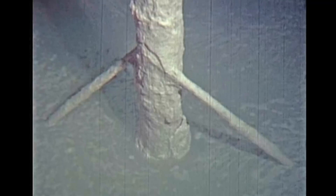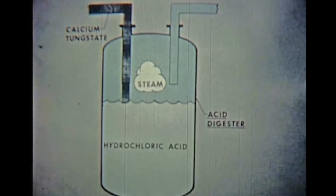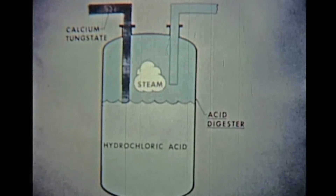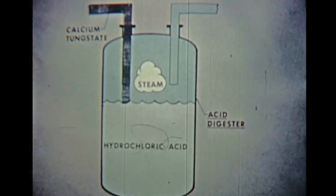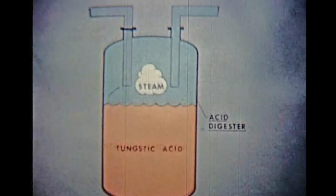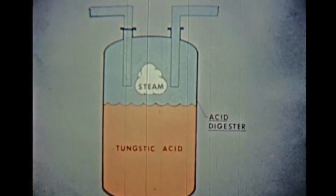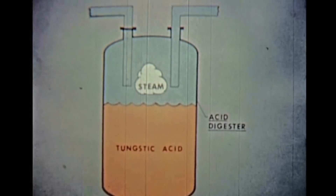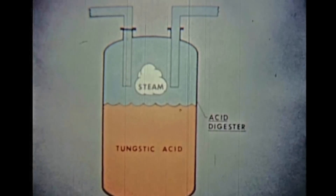The liquid on top is siphoned off, leaving a calcium tungstate slurry which is pumped into a large rubber-lined tank previously filled with hot hydrochloric acid. After the reaction is complete, the tank contains a yellow precipitate, which is tungstic acid.